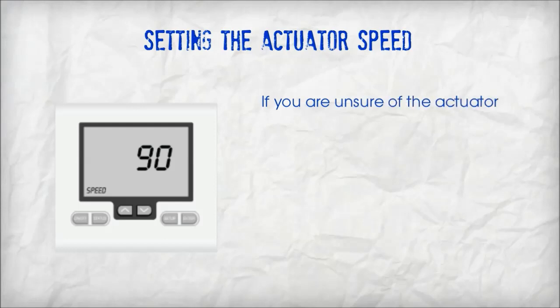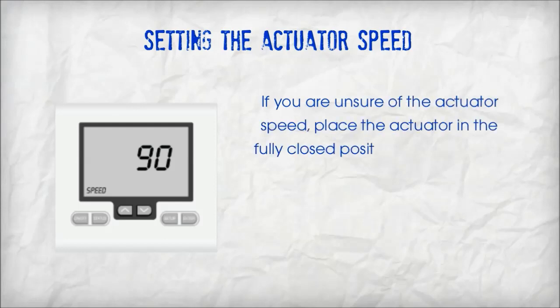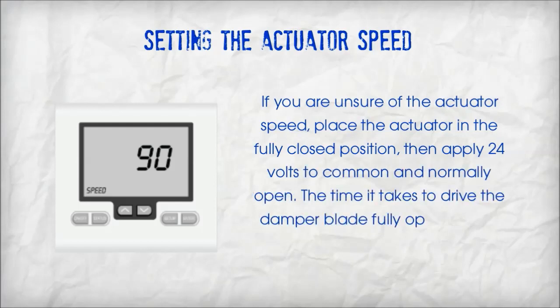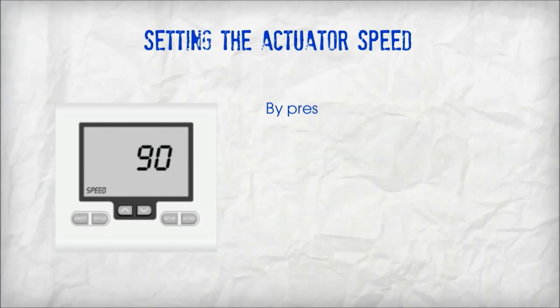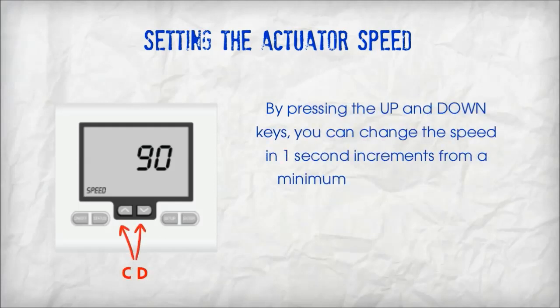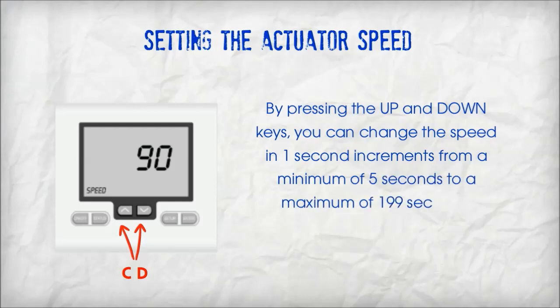If you are unsure of the actuator speed, place the actuator in the fully closed position, then apply 24 volts to common and normally open. The time it takes to drive the damper blade fully open equals the actuator speed. By pressing the up and down keys, you can change the speed in 1-second increments from a minimum of 5 seconds to a maximum of 199 seconds.